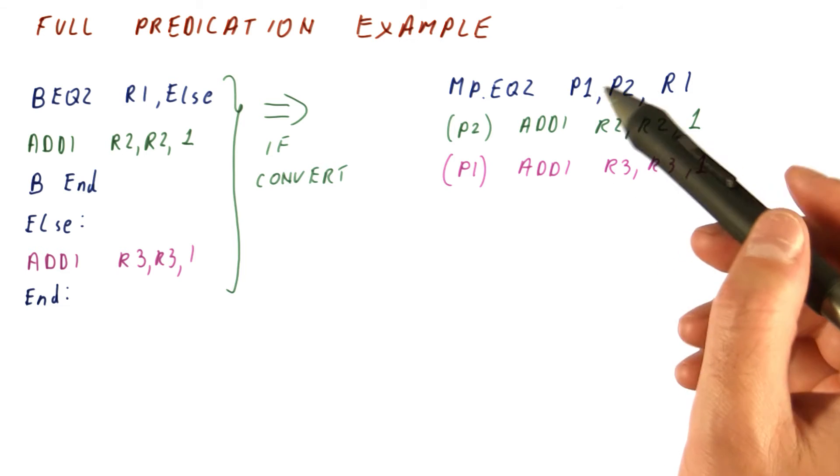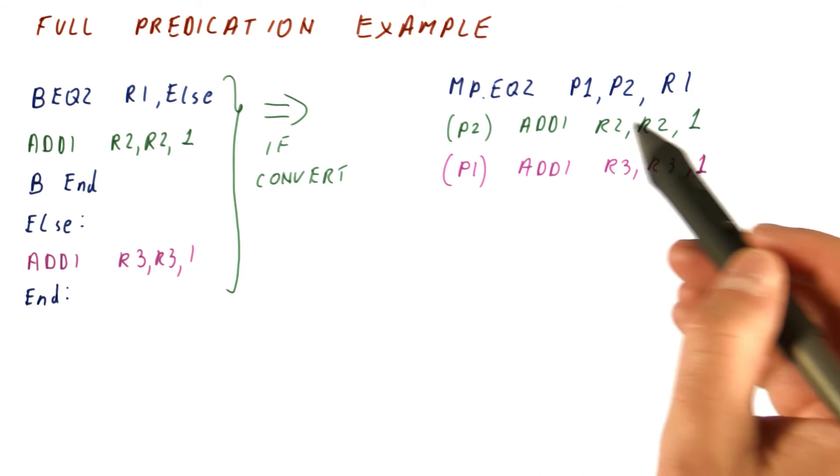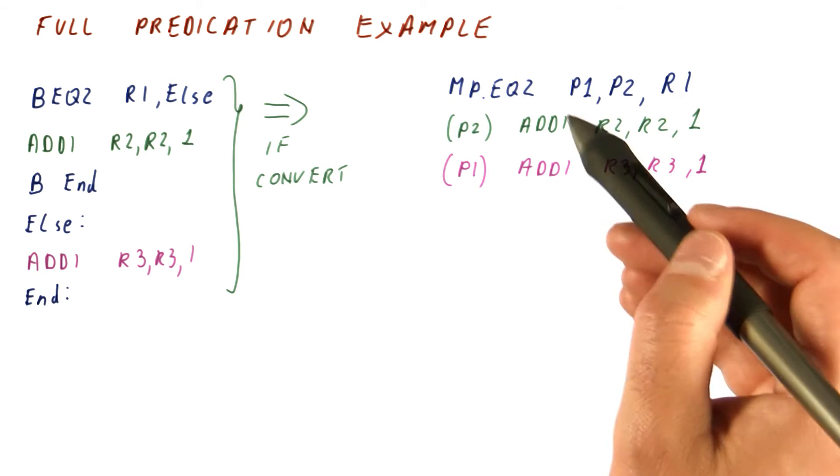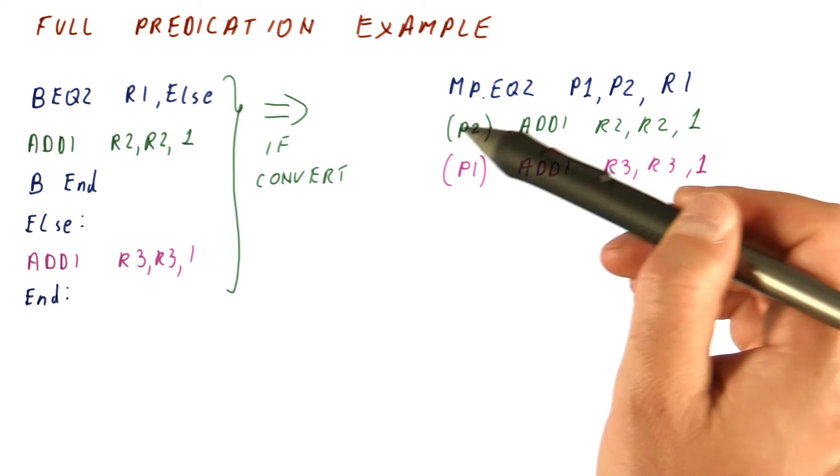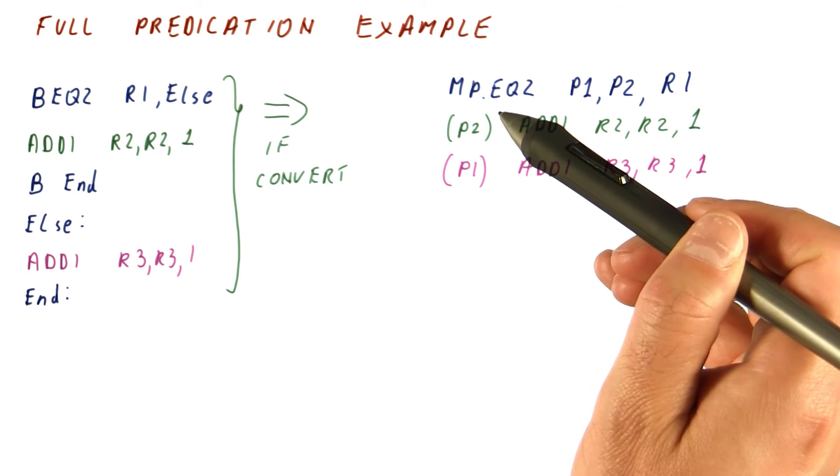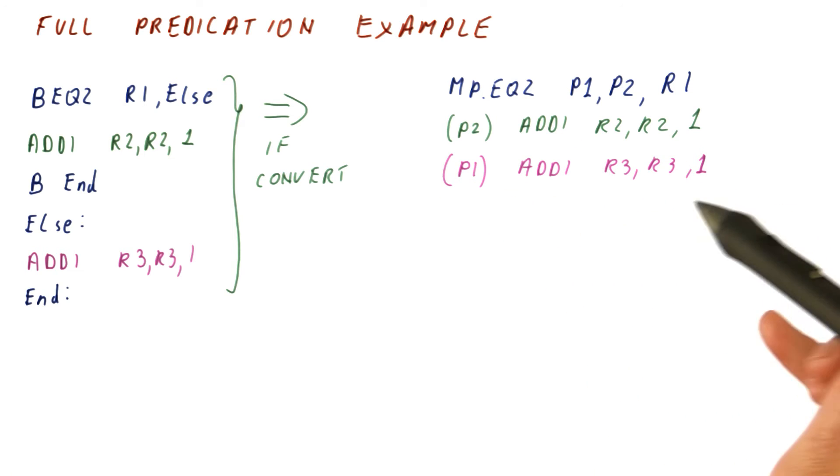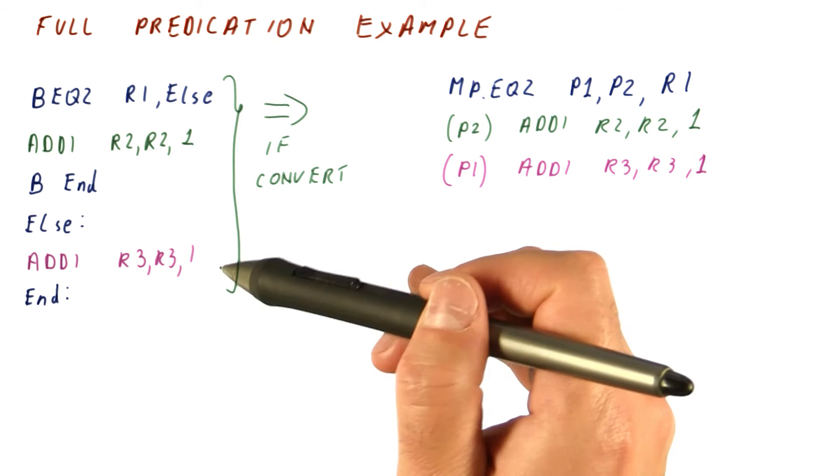So as you can see with this, after we do this initial instruction that simply sets the predicates, any code that was here simply gets predicated with one of the conditions. The opposite condition predicates the other branch's code.